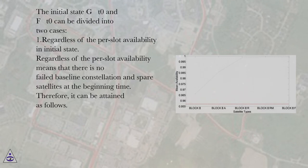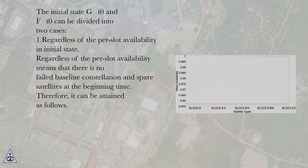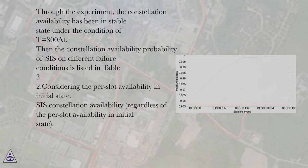The initial state GT0 and FT0 can be divided into two cases. Case 1: regardless of the per-slot availability in initial state. This means that there is no failed baseline constellation and spare satellites at the beginning time. Through the experiment, the constellation availability has been in stable state under the condition of T equals 300 delta T.